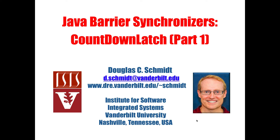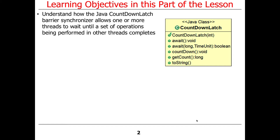Now that you have a basic understanding of what a barrier synchronizer is, let's take a look at a concrete example. The first one we're going to look at is the countdown latch. The countdown latch is a barrier synchronizer that allows one or more threads to wait until a set of operations performed by other threads are complete — so it's used to wait for stuff to finish.